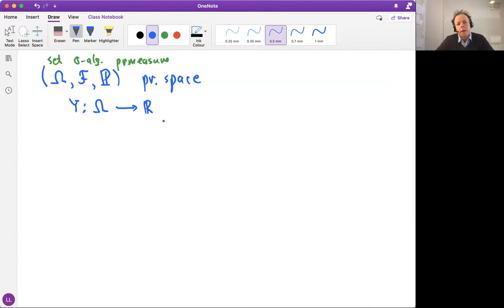So it should be second countable and separable metric space. If you want to be general, you could think this is a much more general thing. But for concreteness, it's helpful to think that this is the real line.